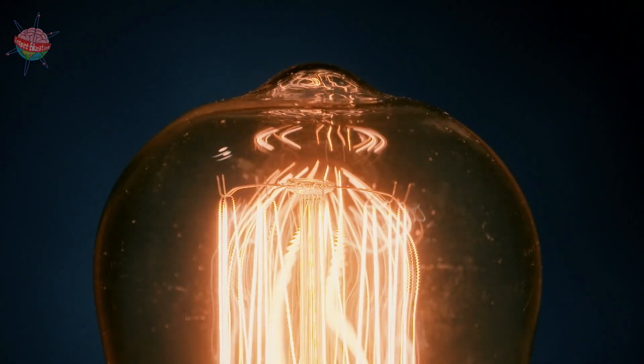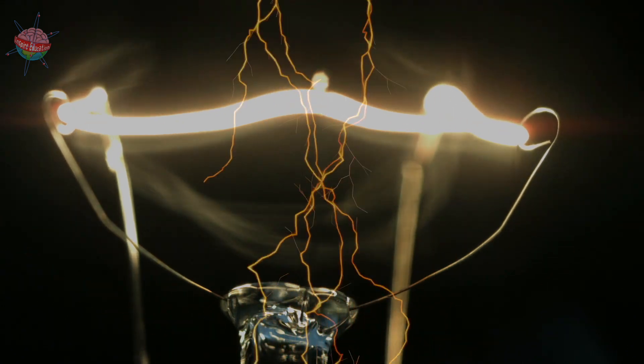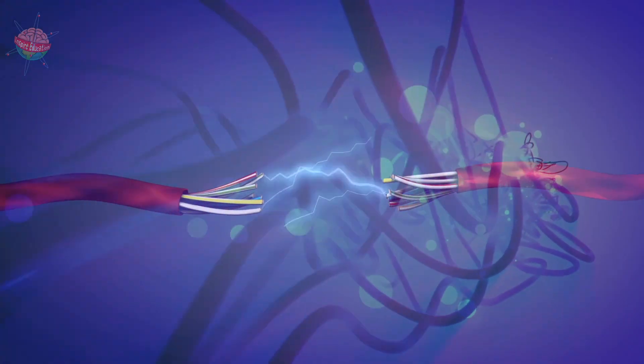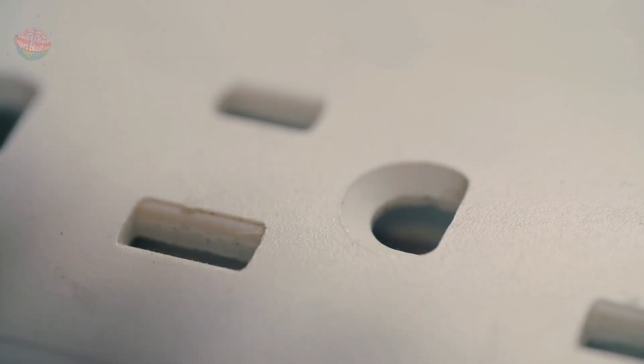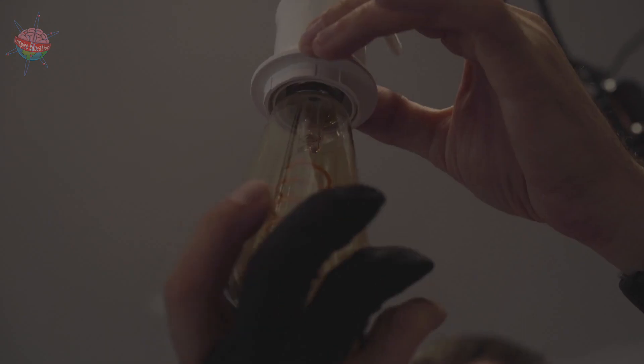That solution turned out to be the incandescent lightbulb. Incandescent lightbulbs work by passing an electrical current through a wire circuit containing a power source, a battery or electricity from a plug socket, and a lightbulb.